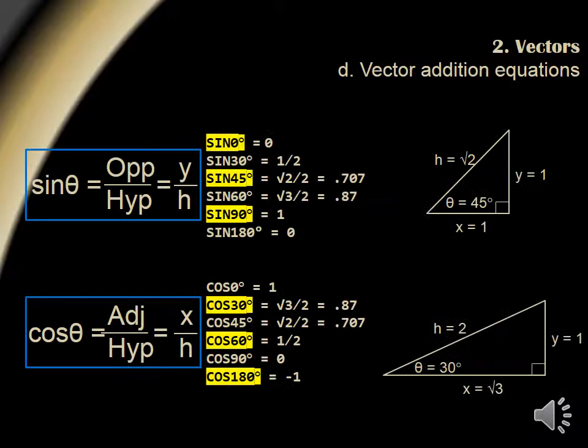Next, let's look at some trigonometric functions which help us to calculate vector magnitudes and direction. Some of the common angles and values can be seen here, including 0, 30, 45, 60, 90, and 180. Vectors that form right triangles can be resolved using the Pythagorean theorem, or a squared plus b squared equals c squared, which is how we come up with h equal to root 2.